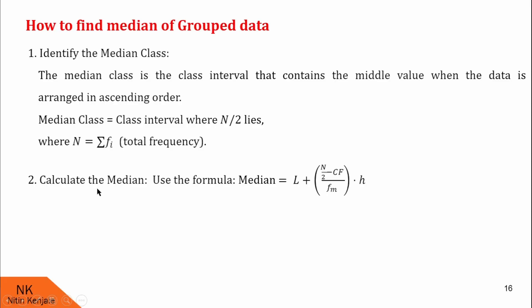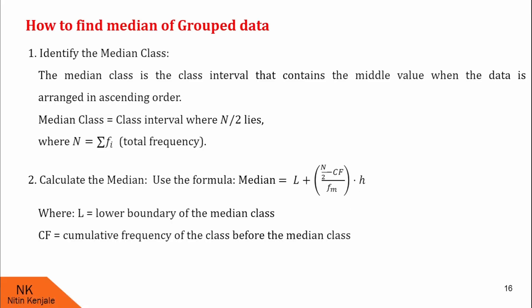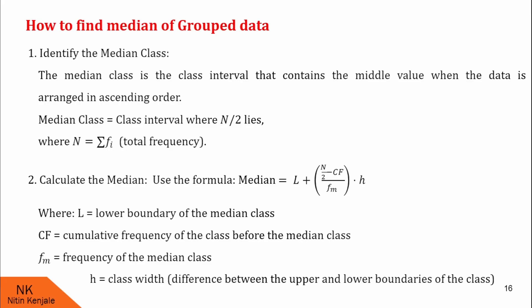In the second step, we calculate the median using the formula: l plus n by 2 minus cf upon fm into h, where l is the lower boundary of the median class, cf stands for cumulative frequency of the class before the median class, fm stands for frequency of the median class, and h is the class width — that is the difference between the upper and lower boundaries of the class.